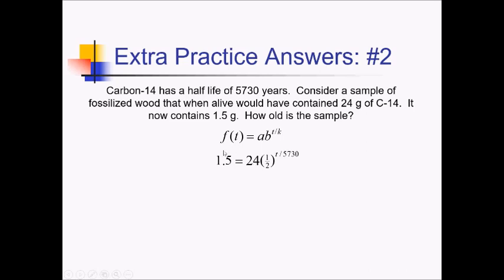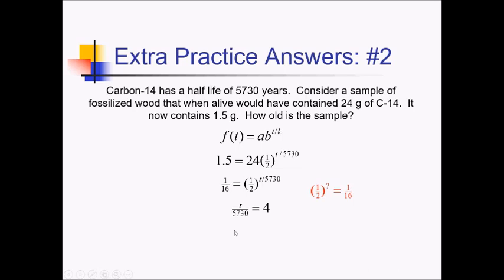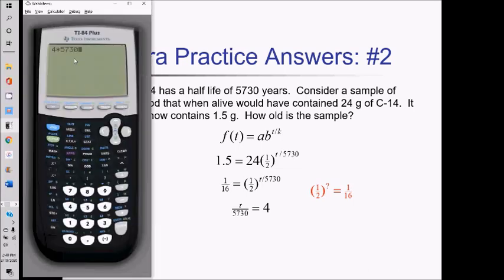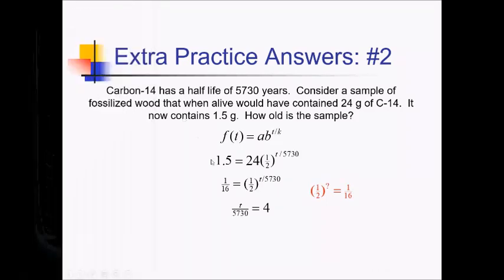1.5 over 24 — well, 3 over 24 would be 1/8, so this is going to be 1 over 16. Now, if 1.5 to something equals 1 over 16, what does that exponent have to be? 1.5 to the fourth power gives 1/16. So T over 5,730 must equal 4. Multiplying both sides by 5,730: 4 times 5,730 gives 22,920 years.